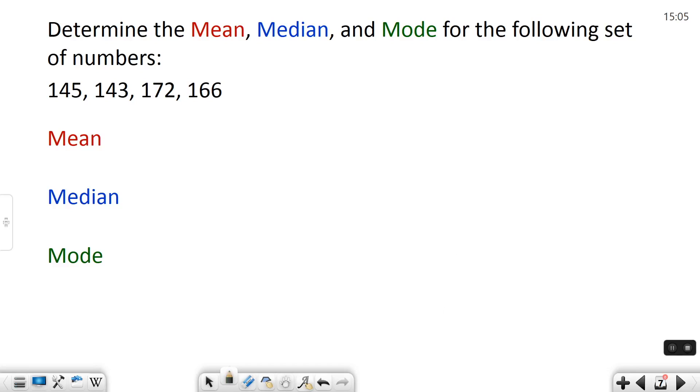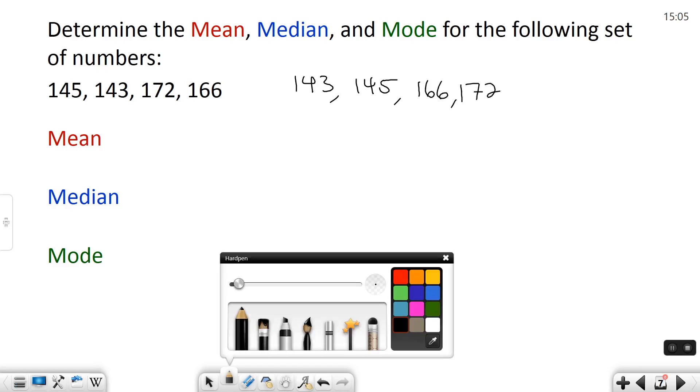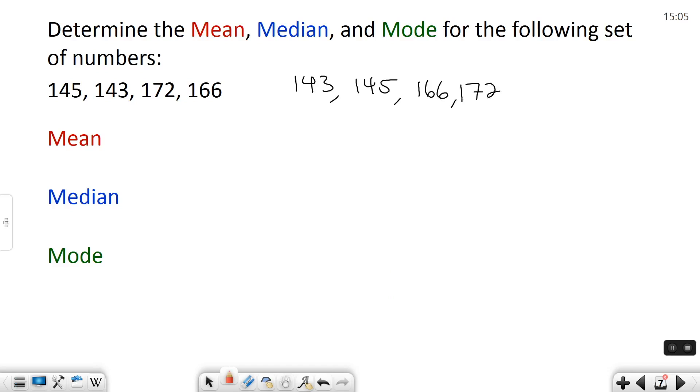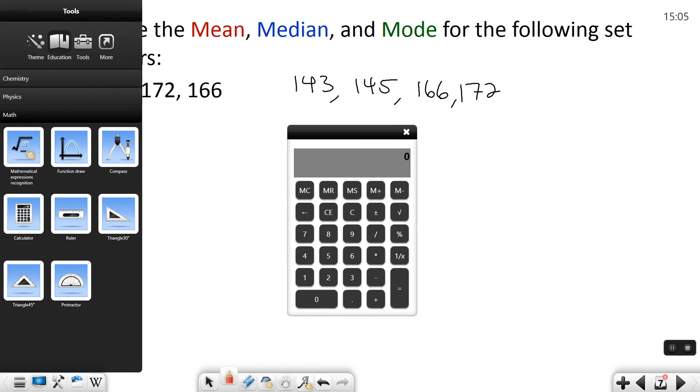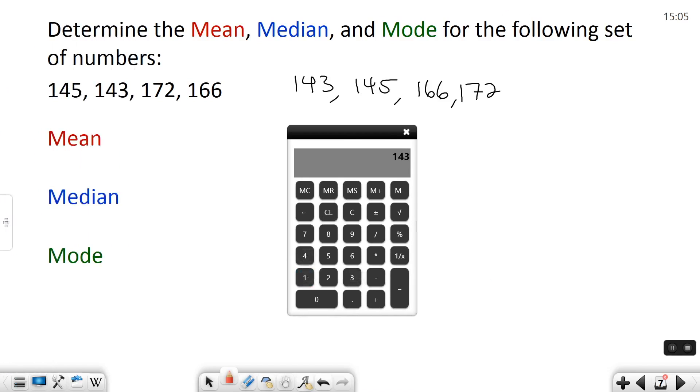I have 143, 145, 166, and 172. Next the mean. I'm going to add up the four numbers and divide by four. So 143 plus 145 plus 166 and 172. Add them all up I get 626.